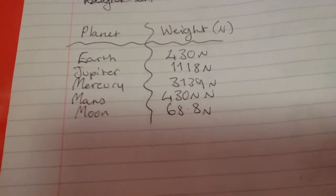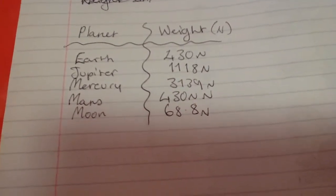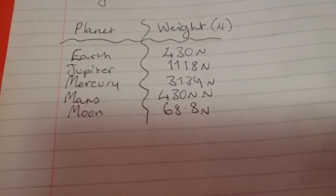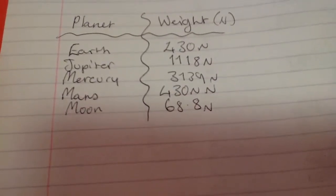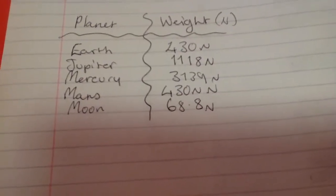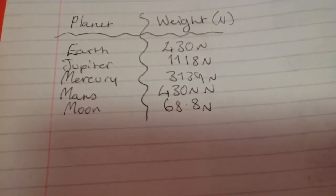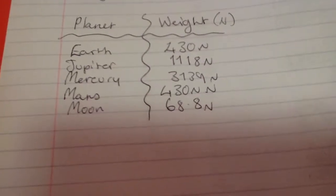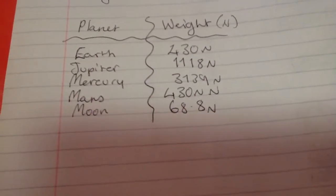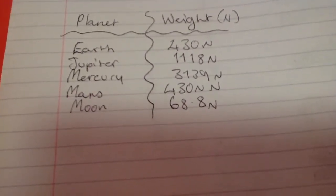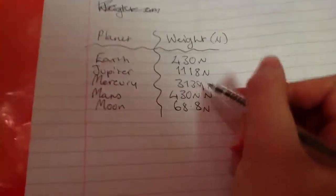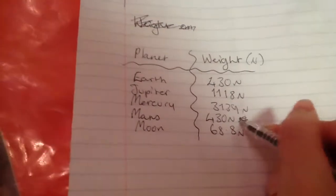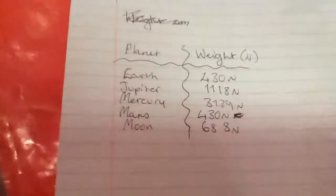So my weight for Earth is 430 Newtons, my weight for Jupiter is 1118 Newtons, my weight for Mercury is 172 Newtons, my weight for Mars is 430 Newtons, and my weight for the Moon is 68.8 Newtons.